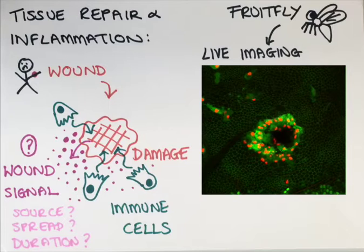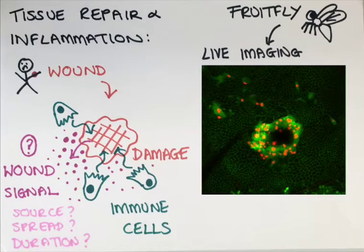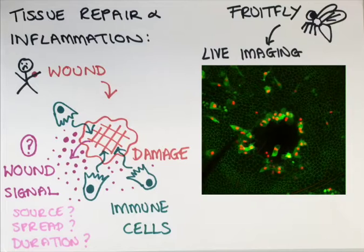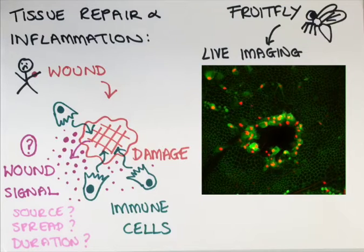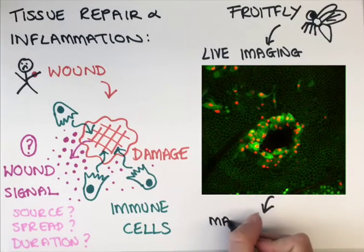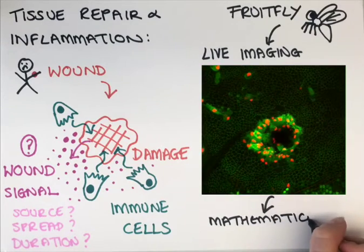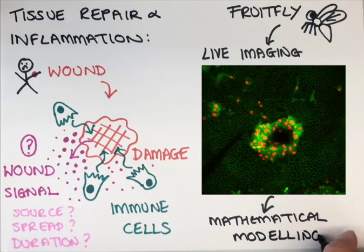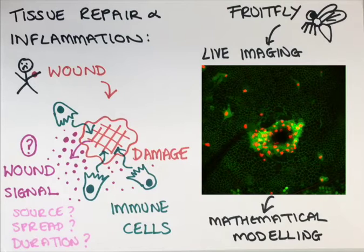We generated large numbers of these movies of both wounded and control tissue to give us lots of information about how the immune cells are being attracted into the wound site. All of this information about immune cell recruitment we then analyse using mathematical modelling, which allows us to extract information about the wound signal from the behaviour of the responding immune cells.